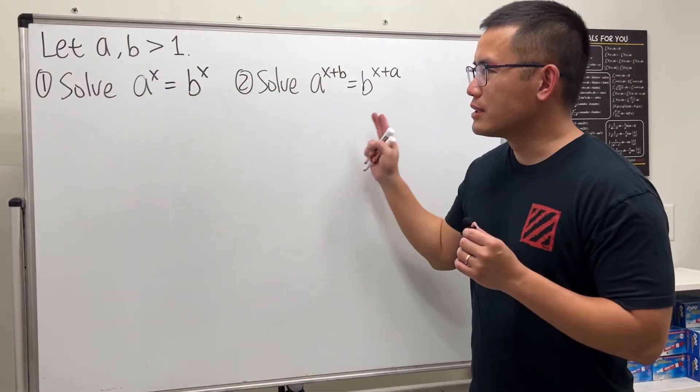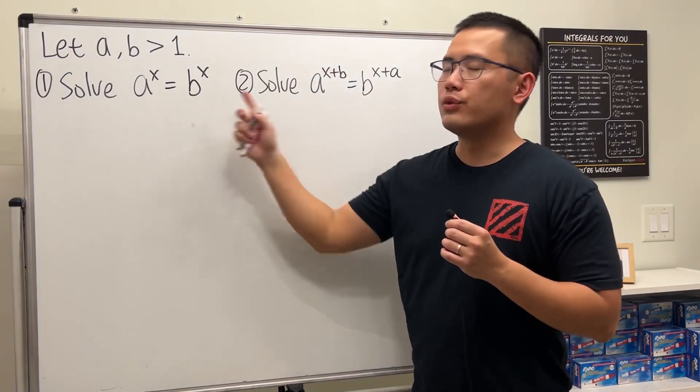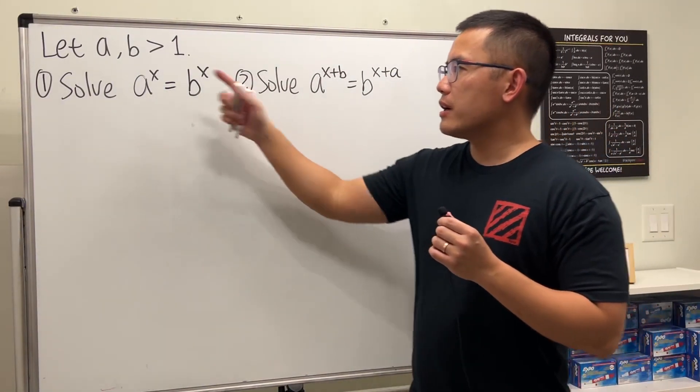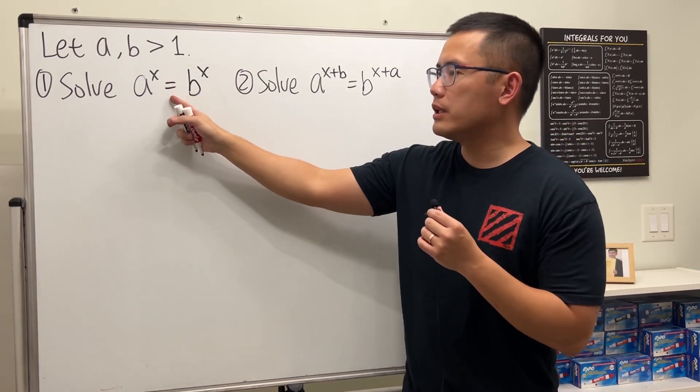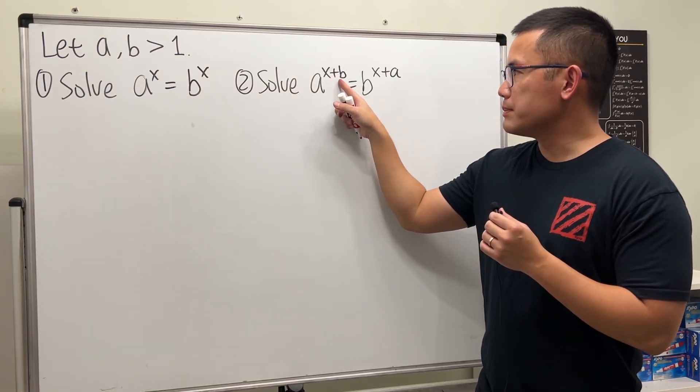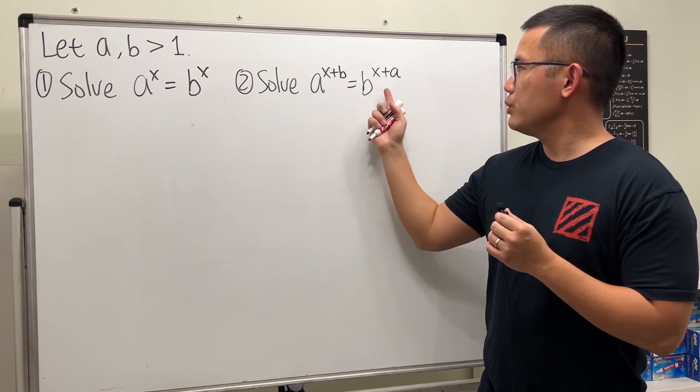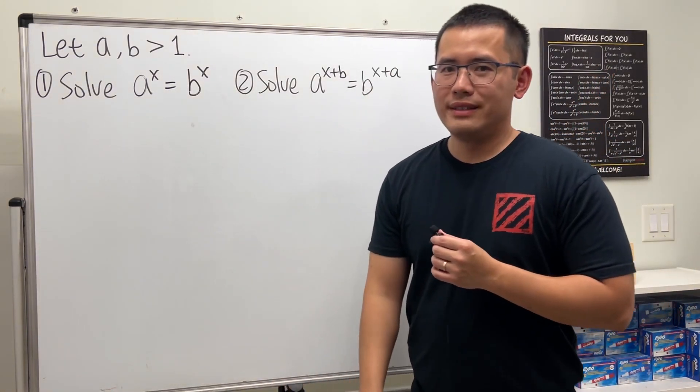I wanted to show you guys how to solve these two exponential equations. Notice that they have two different bases. Here a and b are both greater than one. The first equation is a^x equals b^x, and for the second one we have a^(x+b) equals b^(x+a). Let's do the first one.